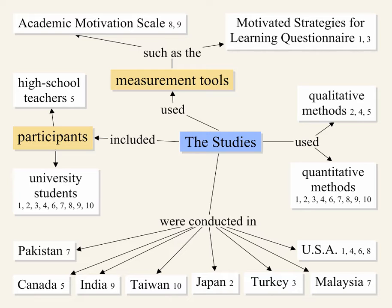The remainder used entirely quantitative methods. The studies included in this analysis were conducted across a wide geographic area, including Canada, the United States, Japan, Taiwan, India, Malaysia, Pakistan, and Turkey.